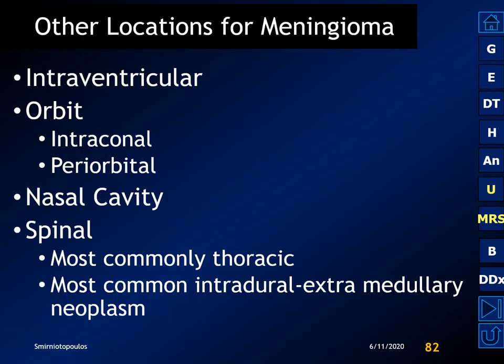Meningiomas may arise from any location that contains arachnoidal capsules. They may occur inside the ventricle, in the dural sheath around the optic nerve, they've been reported in the nasal cavity, and of course they occur inside the spinal canal as one of the most common intradural extramedullary neoplasms.